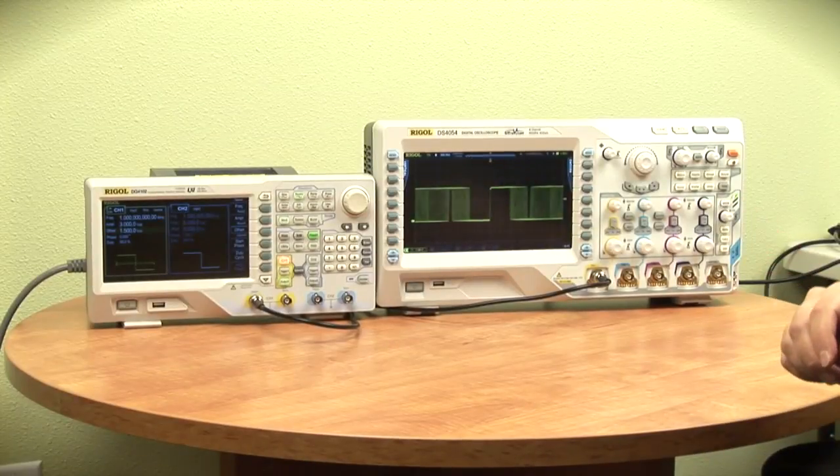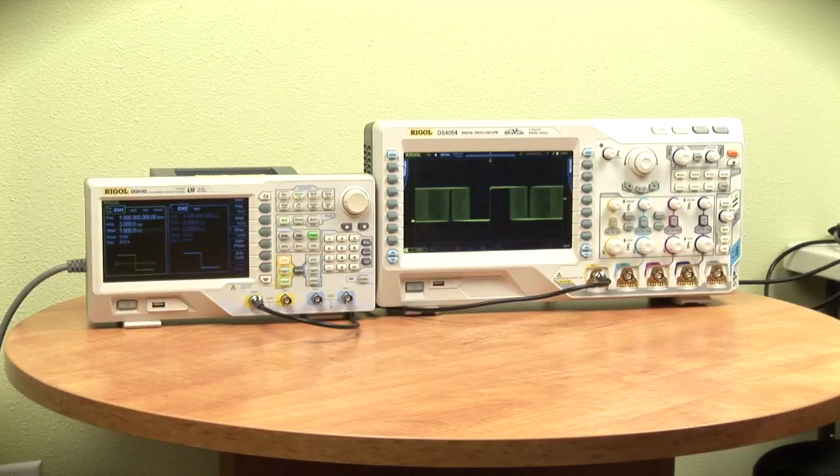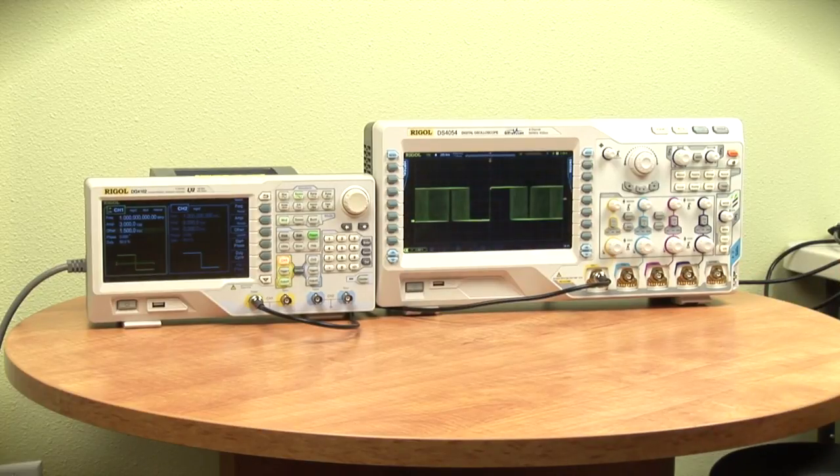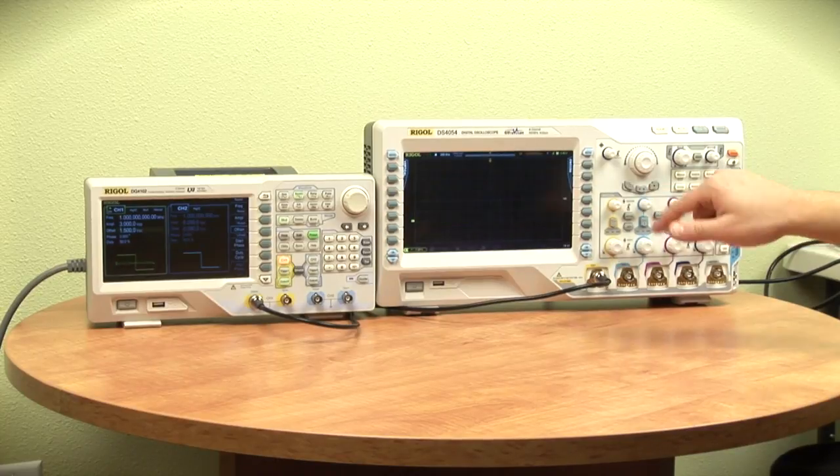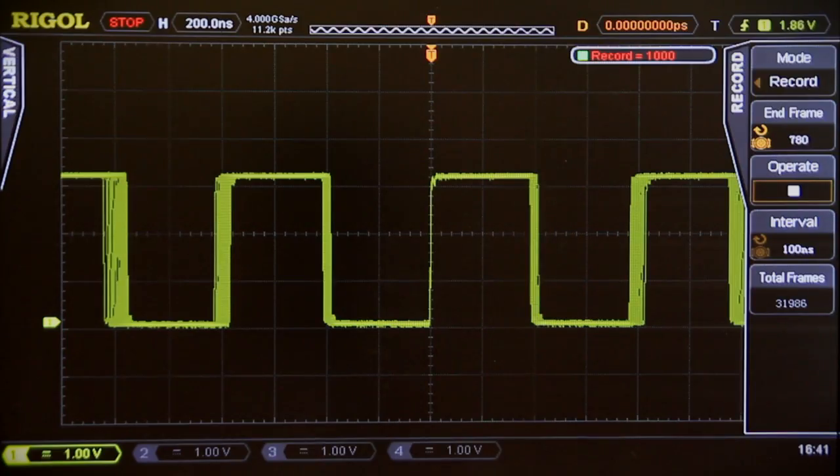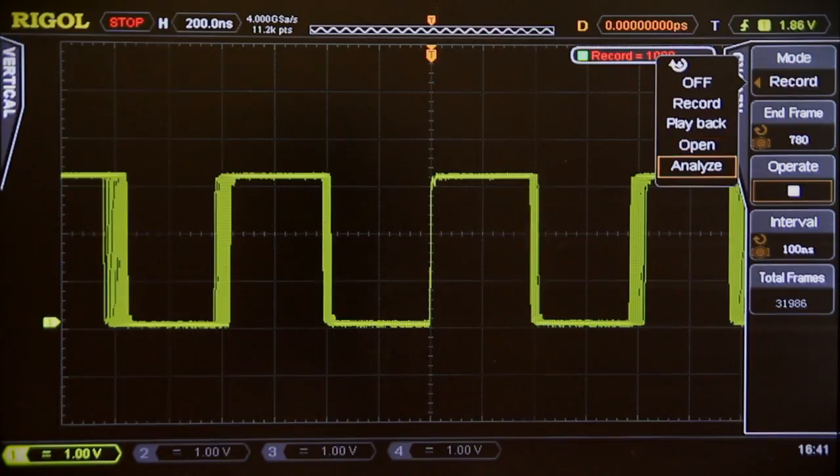Now we're going to look at a different kind of signal with a different kind of error. Here, something's happening so frequently, it's making it difficult to visualize on the oscilloscope. In this mode, if we record a thousand frames of it, let's go in and analyze those.